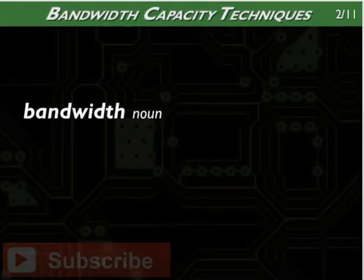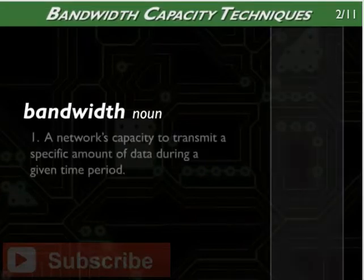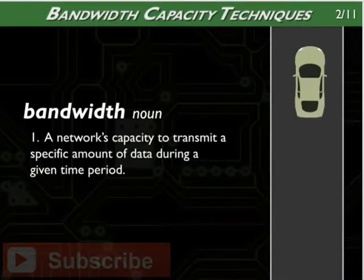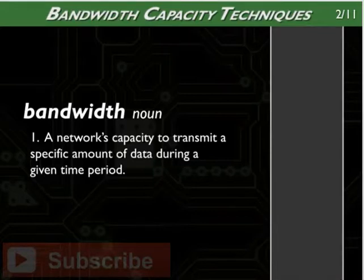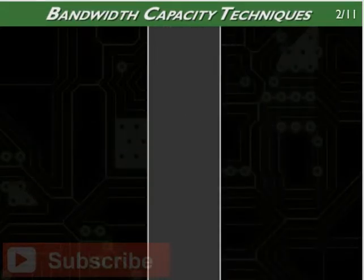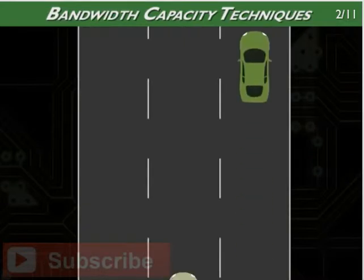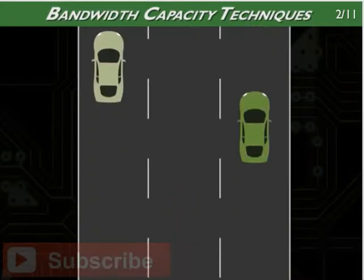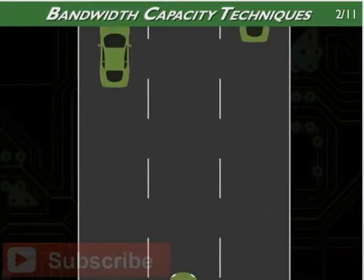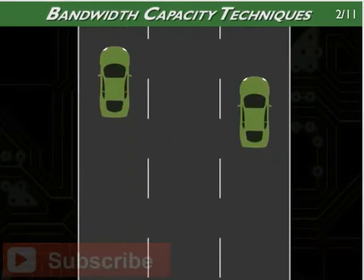Bandwidth typically refers to a network's capacity to transmit a specific amount of data during a given time period. The term is commonly used when discussing networking. As the bandwidth increases, the volume of transmitted data also increases, which allows for faster data transmission.